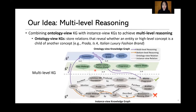Our idea is to combine ontology KGs with instance KGs to achieve multi-level reasoning. Ontology KGs define relations that reveal whether an entity is a child of another concept — for example, that a product is an Italian luxury fashion brand. Based on such a multi-level knowledge graph, we can immediately know that most behaviors of Alice are related to cosmetics produced by Italian luxury fashion brands, which makes it easy to give the correct recommendation.